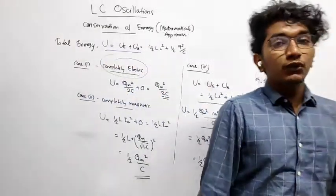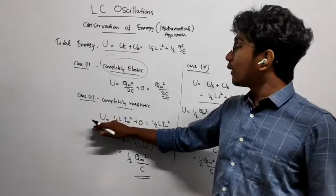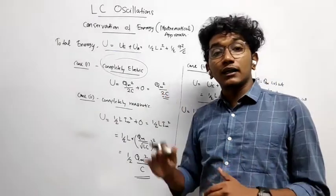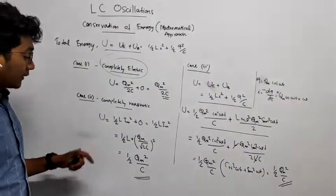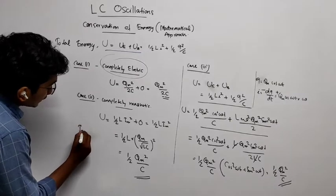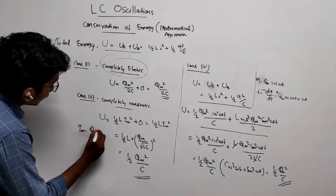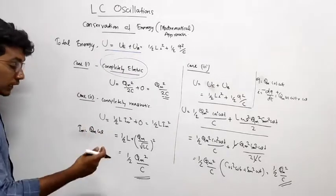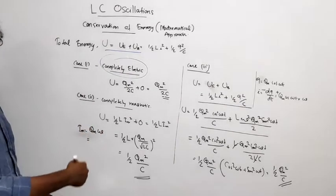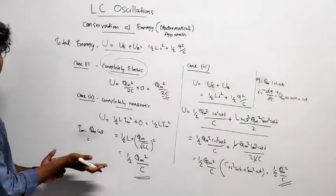What is our aim? Our aim is we want to prove that this value and this value are both equal. So let's try for that. And we know that the current Im is equal to Qm into omega. We have the equation because there is the angular frequency of that.